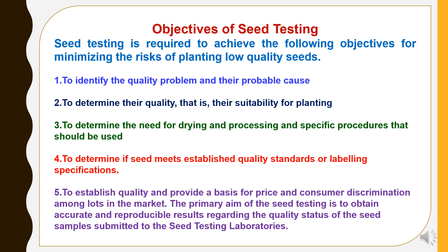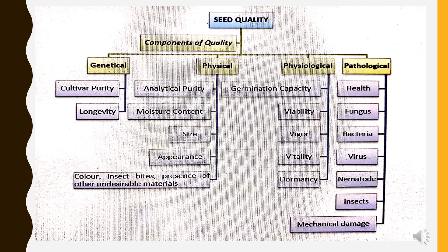The primary aim of seed testing is to obtain accurate and reproducible results regarding the quality status of the seed samples submitted to the seed testing laboratories. Here we have shown the chart of seed quality. Seed quality has been categorized in four parameters: first is genetical quality, second is physical quality, third is physiological quality, and fourth is pathological quality.